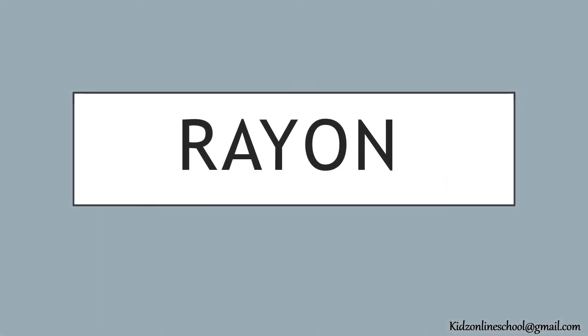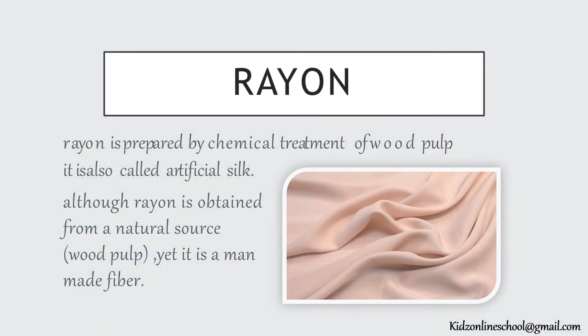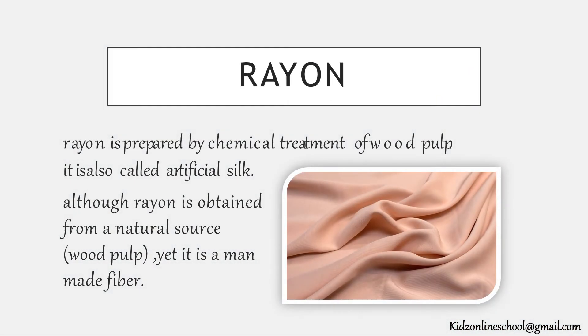Rayon: Rayon is prepared by chemical treatment of wood pulp. It is also called artificial silk. Although rayon is obtained from a natural source, yet it is a man-made fiber.